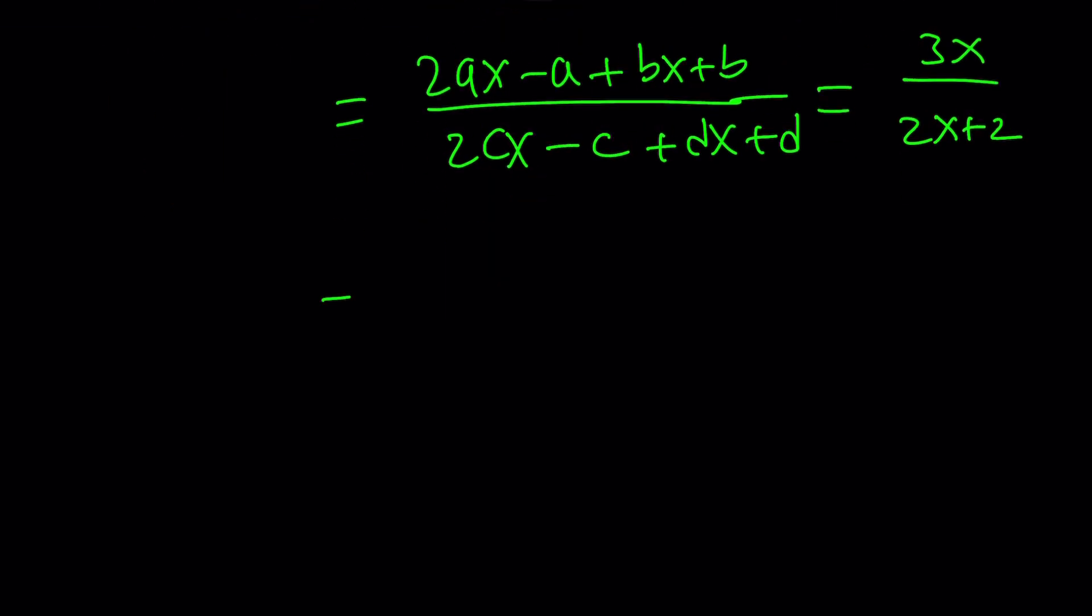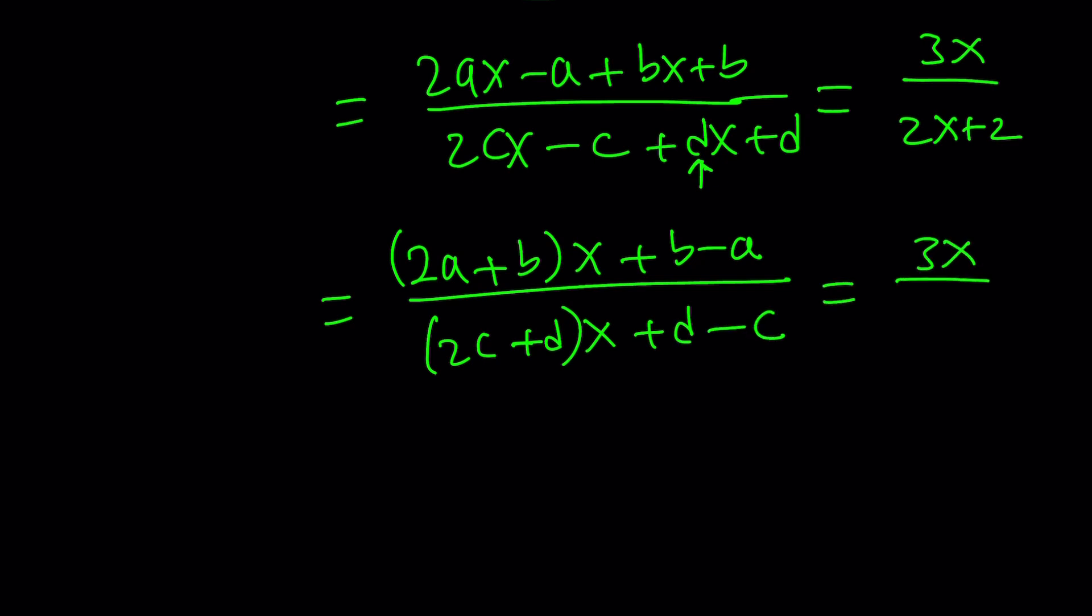Now, let's go ahead and simplify this a little bit. We can write it as 2a plus b as the coefficient of x and then plus b minus a divided by 2c plus d times x plus d minus c. And this is equal to 3x over 2x plus 2. This is the best part.